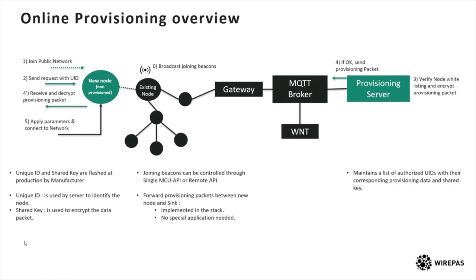When the provisioning server receives the provisioning request, it compares the unique ID received with what it has in its database. If the node is authorized to be provisioned, the provisioning server replies with the provisioning data. The packets follow the same path in the opposite direction, reaching the existing node, which automatically forwards them to the new node. On reception of this provisioning packet, the new node decrypts it if it is encrypted and applies the network parameters. After a reboot, the new node, now having all the network parameters, is able to connect normally to the network.